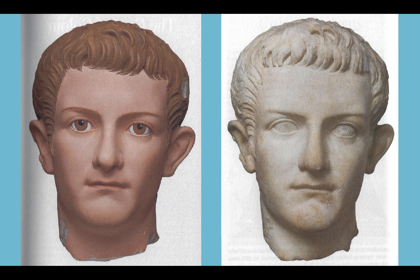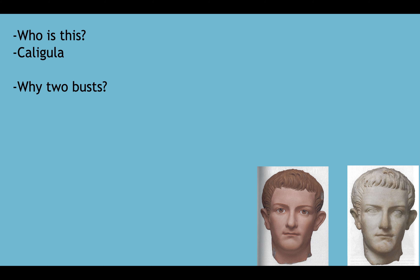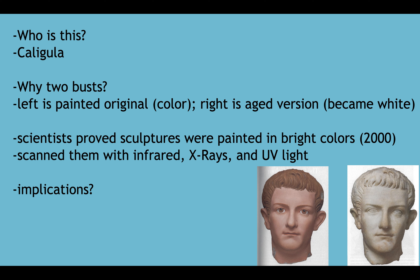You see not just one bust but two — one that's painted on the left, and one you'd traditionally see in a museum on the right. The left is painted, representing how it would have originally looked when made. The right is an aged version; over years of erosion the colors fade and it becomes white. Scientists proved that sculptures were painted in bright colors — this was confirmed by scanning busts with infrared, X-ray, and UV light.